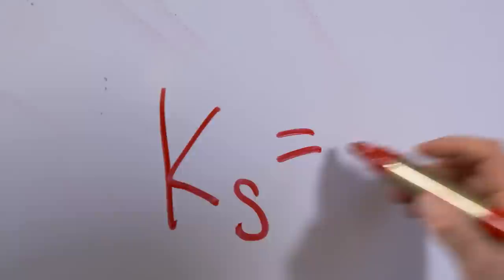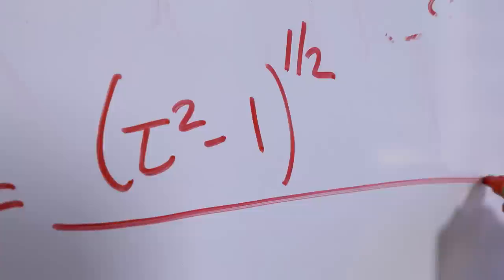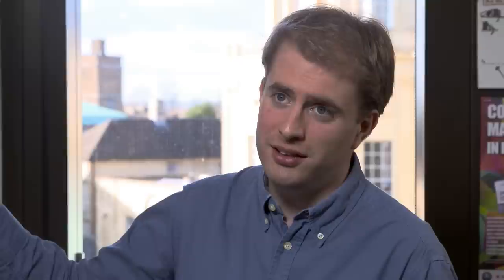The model predicted that the stiffness of the shell should depend on the pressure, which we write with this letter tau, according to this formula. And one thing I really like about this is the simplicity of the result — you would never guess the beautiful combination of a square root here and this arctanh down here. I think it's a really nice example of mathematical modelling giving you results that are really unexpected and aesthetically pleasing.